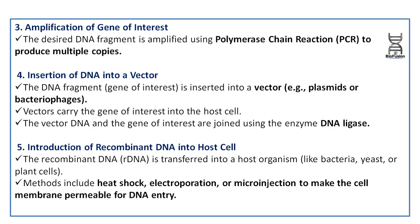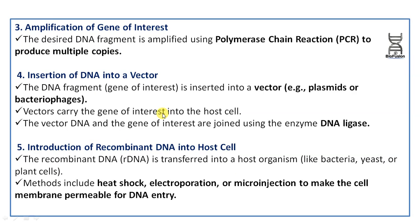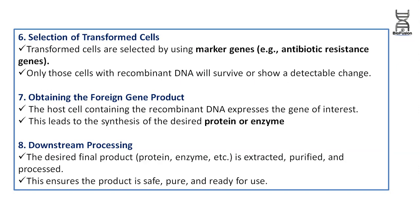The steps are: 1. Isolation of genetic material. 2. Cutting of DNA at specific sites. 3. Amplification of gene of interest. 4. Insertion of DNA into vector. 5. Introduction of recombinant DNA into host cell. 6. Selection of transformed cell. 7. Obtaining the foreign gene product. 8. Downstream processing.